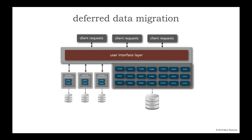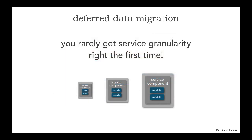Similarly, we might see an opportunity where that service on the left-hand side is too coarse-grained and we see an opportunity to split that up into two services — a service split pattern. A little bit more complex, but it's still fairly straightforward. But now I have a second data migration. Data, when we start migrating data, we're playing with the company's most important asset. And the key rule is this: you will rarely get the service granularity right the first time when you move to microservices, especially in production.